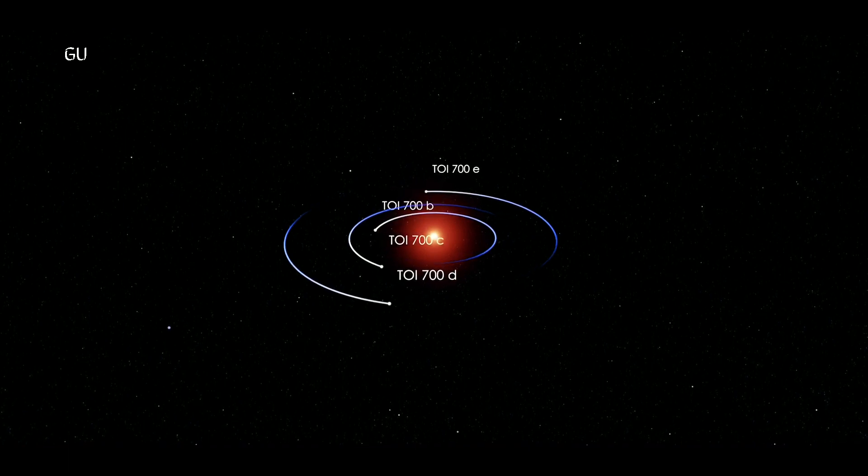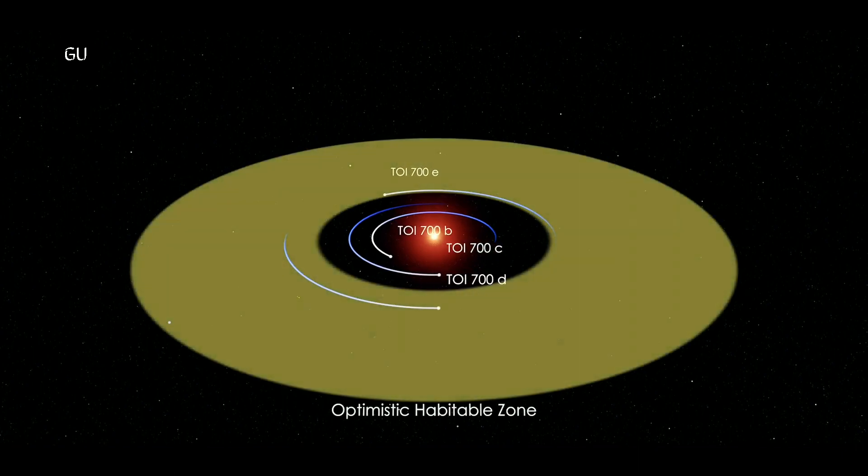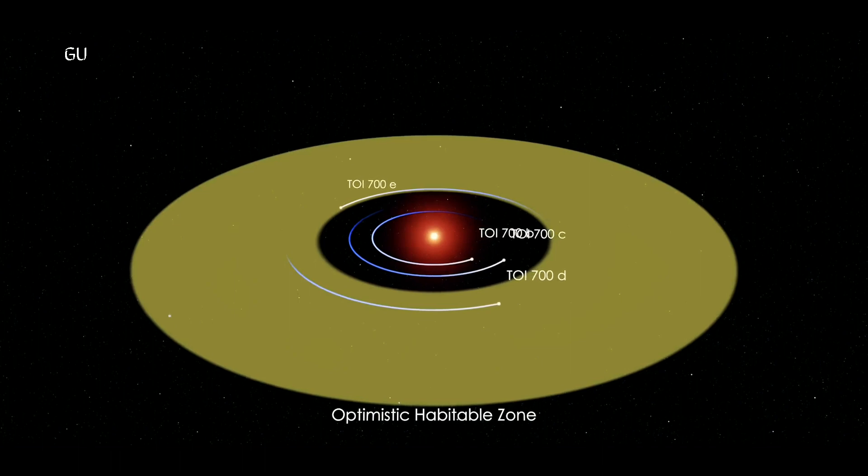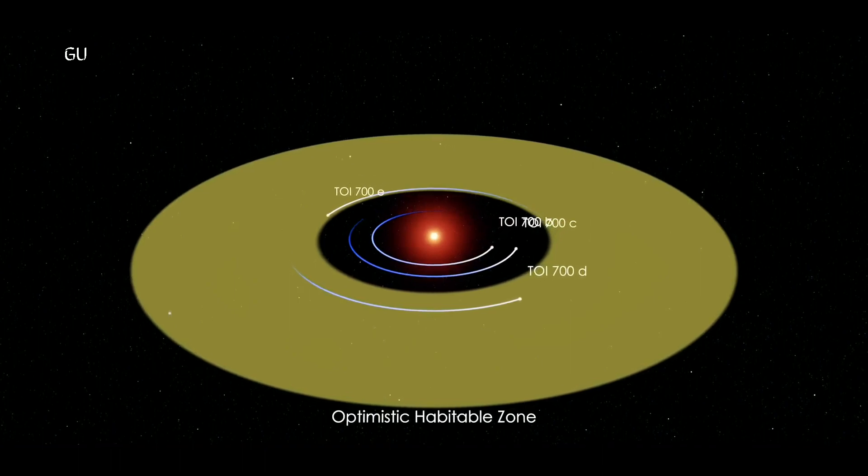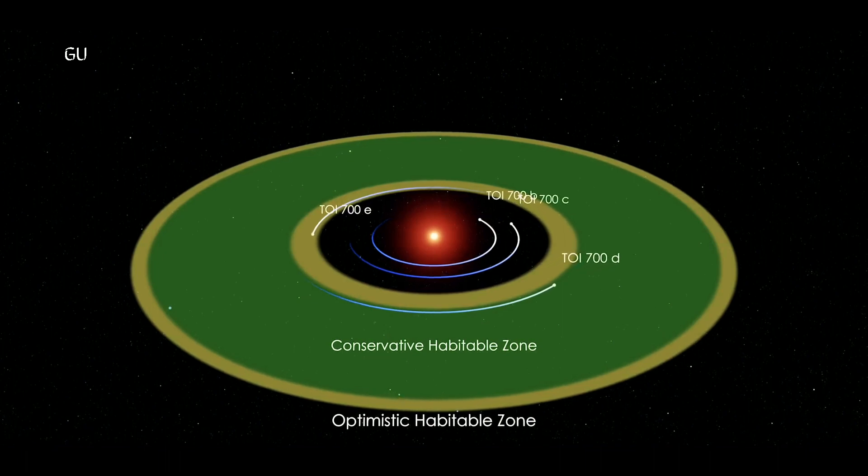TOI 700 is a star the planets orbit around, but only D and E orbit in the habitable zone. A habitable zone, also known as the Goldilocks zone, is an area that is just the right distance from a star that water can exist on a planet's surface, and the conditions are neither too hot nor too cold for life.